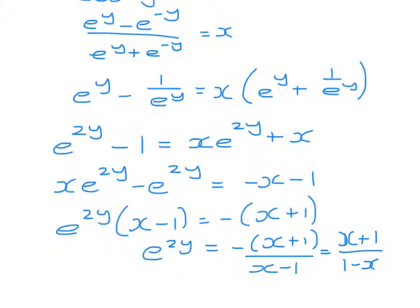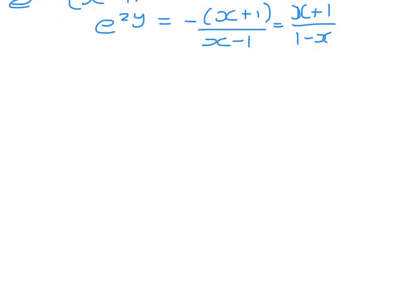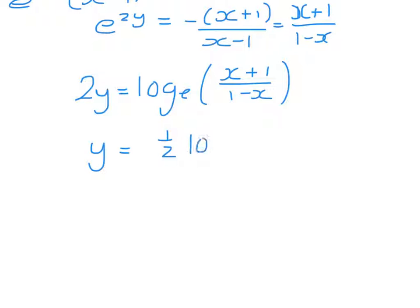To finish this, we're going to take our equation and rewrite it as a log. So 2y equals the natural log of x plus 1 all over 1 minus x. y equals 1 half log of x plus 1 all over 1 minus x. And we started by saying that y was the inverse function.